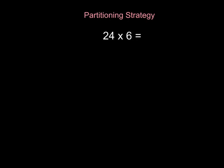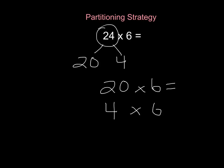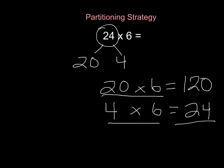The other way you can use the partitioning strategy still means that you need to break apart the 24 into 20 and 4. Although instead of a grid, you're just going to write out the questions: 20 times 6 and 4 times 6. 20 times 6 is 120, and 4 times 6 is 24. If I add those two numbers up — 0 and 4 is 4, 2 plus 2 is 4, 1 plus nothing is 1 — the answer is 144.